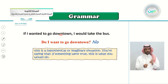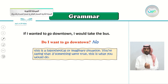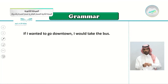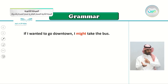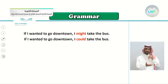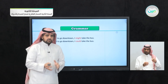Again: if I wanted to go downtown, I would take the bus. Do I want to go downtown? No. But if I wanted to go, I would use this method — going by the bus. Now, focus on the word 'would' here, because if we change it to 'might' or 'could': if I wanted to go downtown, I might take the bus; if I wanted to go downtown, I could take the bus.